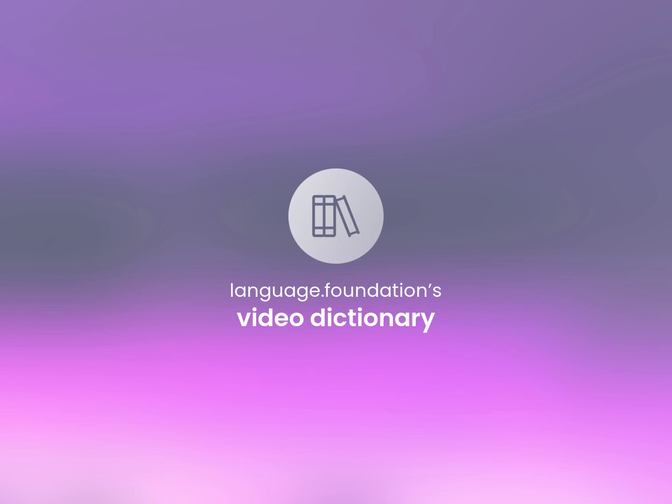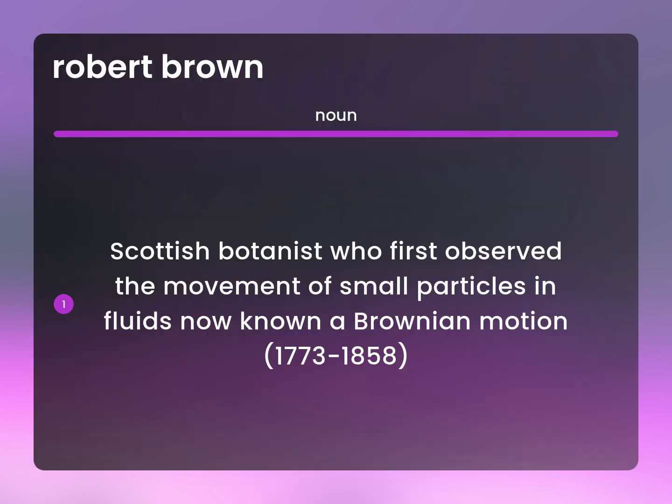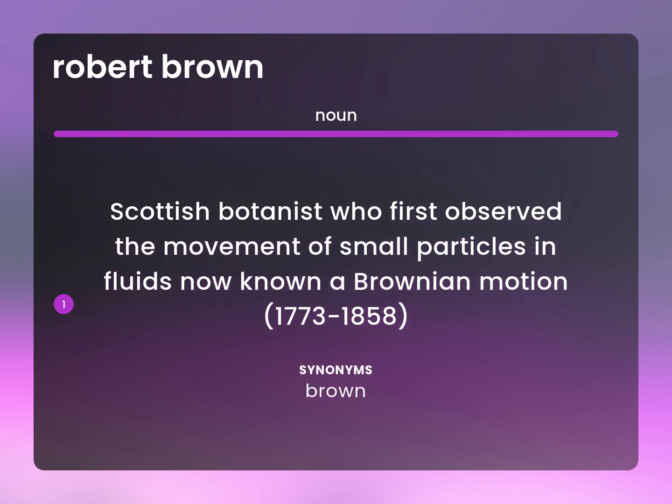Language.Foundation's Video Dictionary, helping you achieve understanding. Robert Brown: Scottish botanist who first observed the movement of small particles and fluids, now known as Brownian motion. 1773 to 1858.